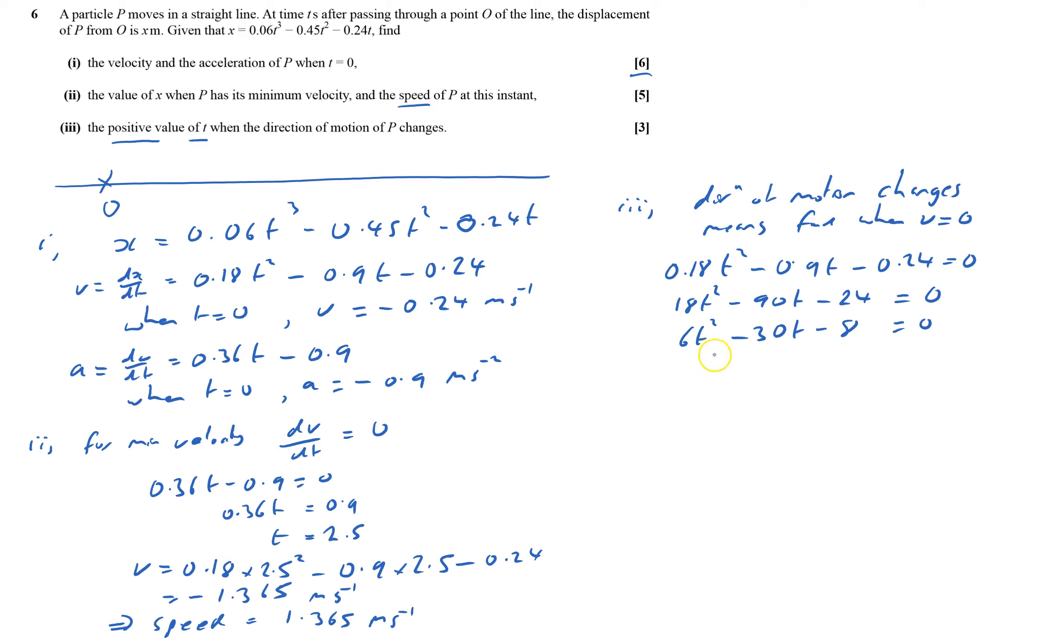And I'll try and factorize that. It's got to be 8, so it's going to be 1 and 8, or 2 and 4. To get 6, it's got to be 1 and 6, or 2 and 3.